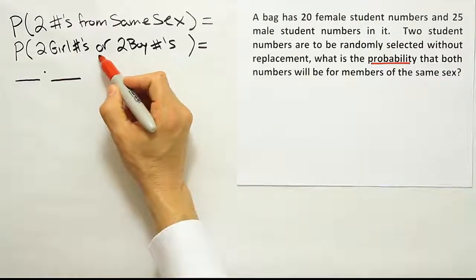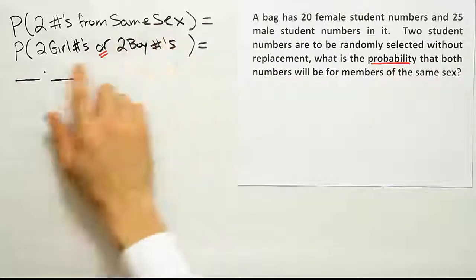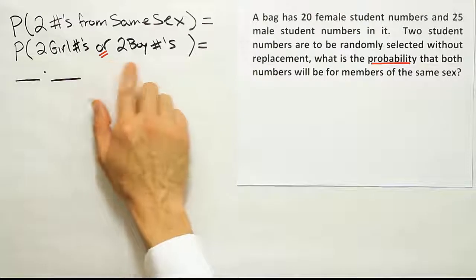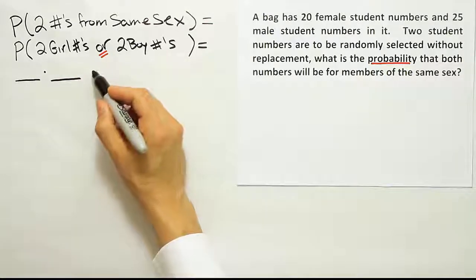And in this case, the word or fits naturally. In fact, you can really not say it without that, right? You have to say two numbers from the same sex. That means either two girls or two boy numbers. There's really no way to say it without using the word or. And we know that in probability, the word or translates into a plus sign.